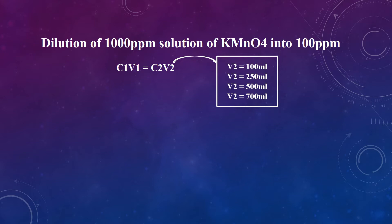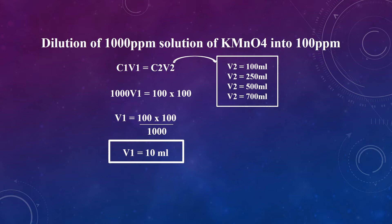In conclusion, you can put any volume in V2 according to your need. So after putting V2 = 100, C1 = 1000, and C2 = 100, we get V1 = 10 ml. This means you have to take 10 ml of potassium permanganate from the stock solution into the funnel. Add a little water, shake it, and dilute the solution up to 100 ml. This will be a 100 ppm solution of potassium permanganate prepared from the 1000 ppm stock solution.